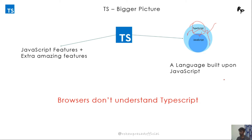TypeScript cannot be understood by the browser or environments like Node, so we need to compile — or transpile — the TypeScript code to JavaScript, which in turn runs in the browser or Node environment. There are other concepts like WebAssembly which bring higher-level languages down to JavaScript that runs in the browser. WebAssembly is still R&D-oriented, but TypeScript does the same kind of thing: we write TypeScript and transpile it to JavaScript, which then runs in the browser.